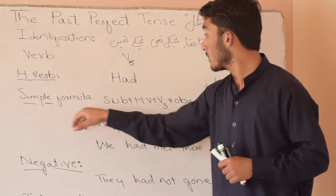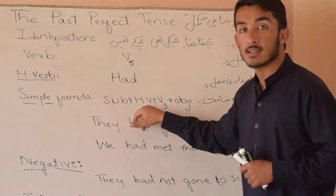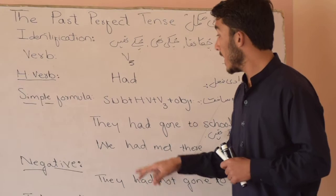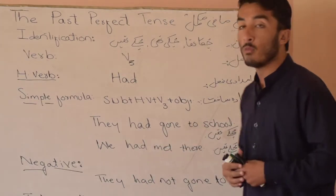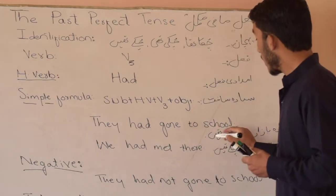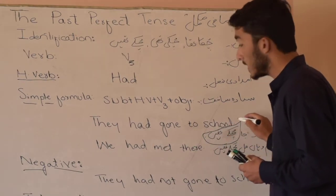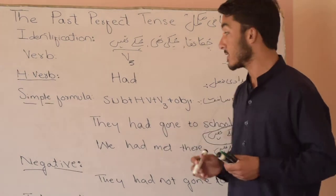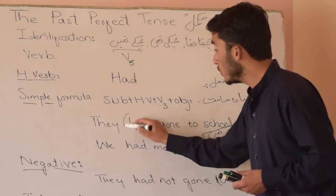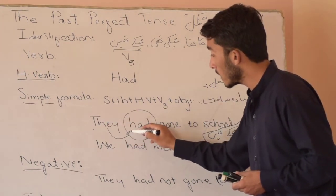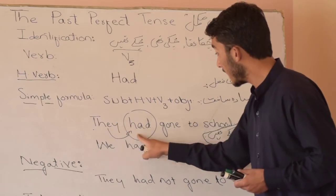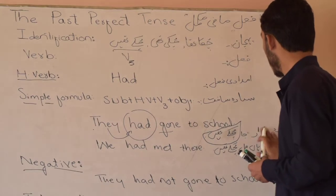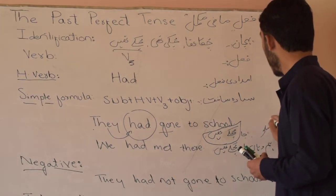Then we have the simple formula: Subject + helping verb + third form of verb + object + full stop. Now we have the sentence 'wo bazaar ja chuke'. The sentence ends with 'chuke', which means it belongs to past perfect tense. With 'they', we use the helping verb 'had'. They had gone to school. Wo school ja chuke.